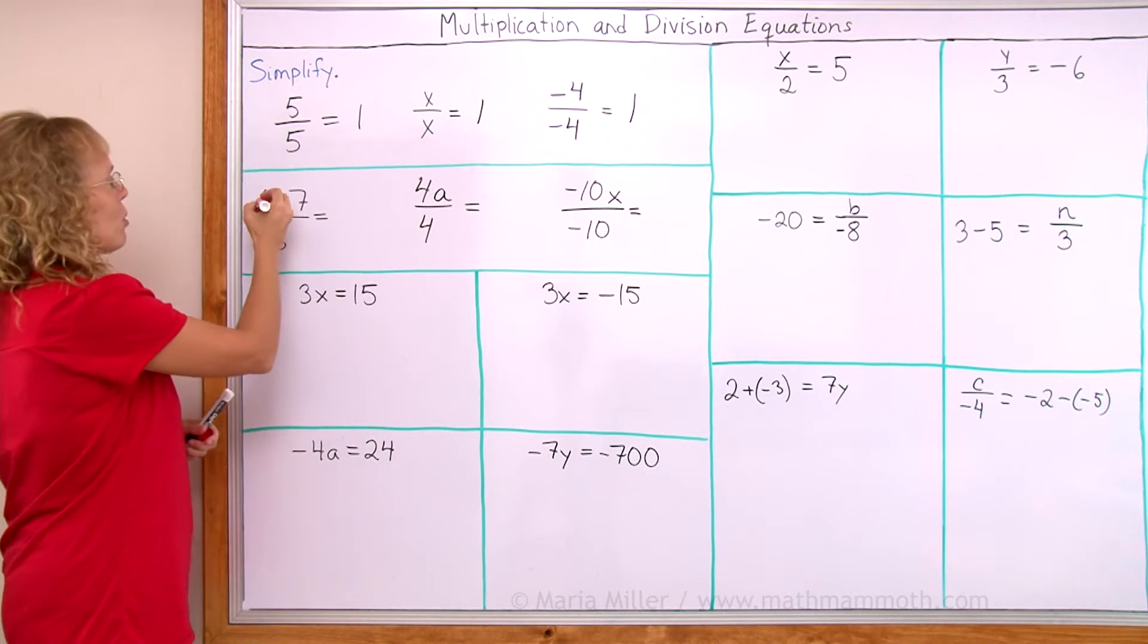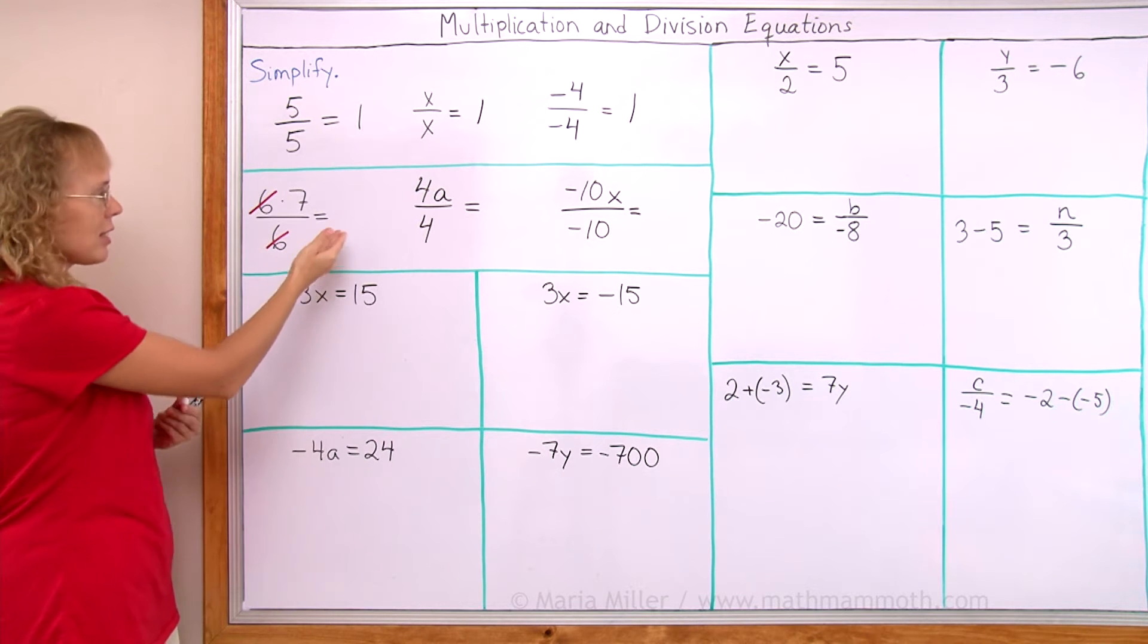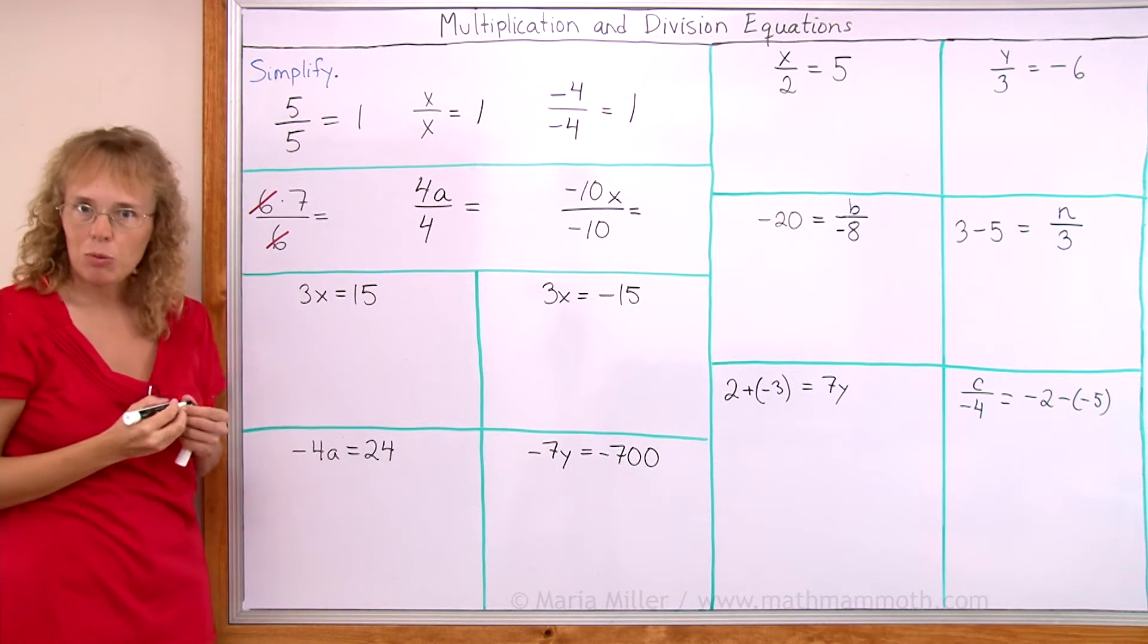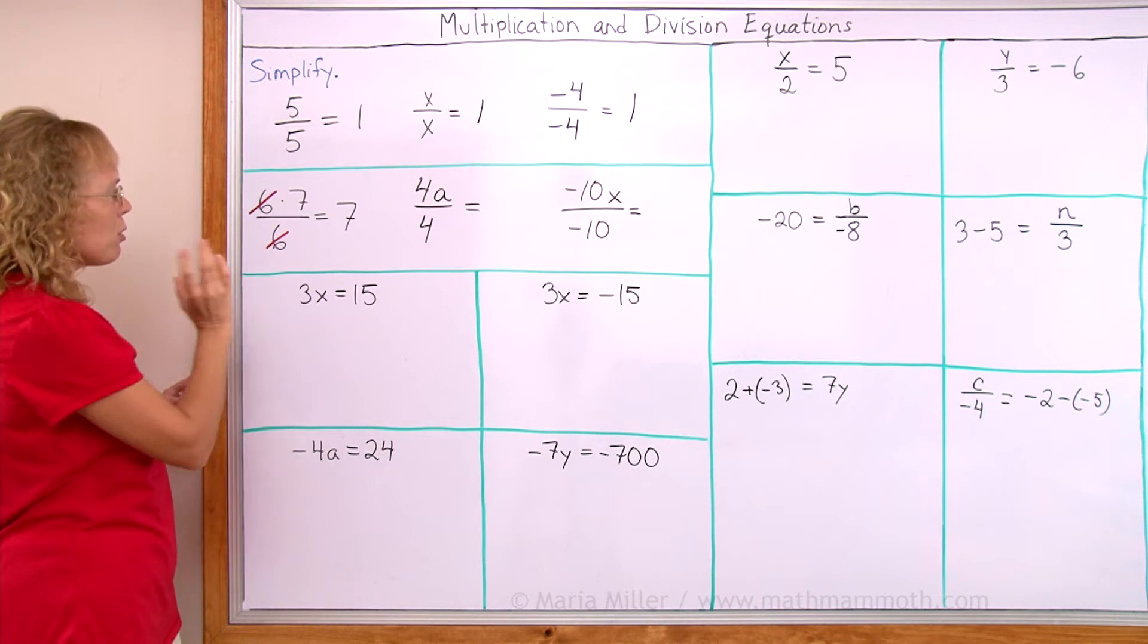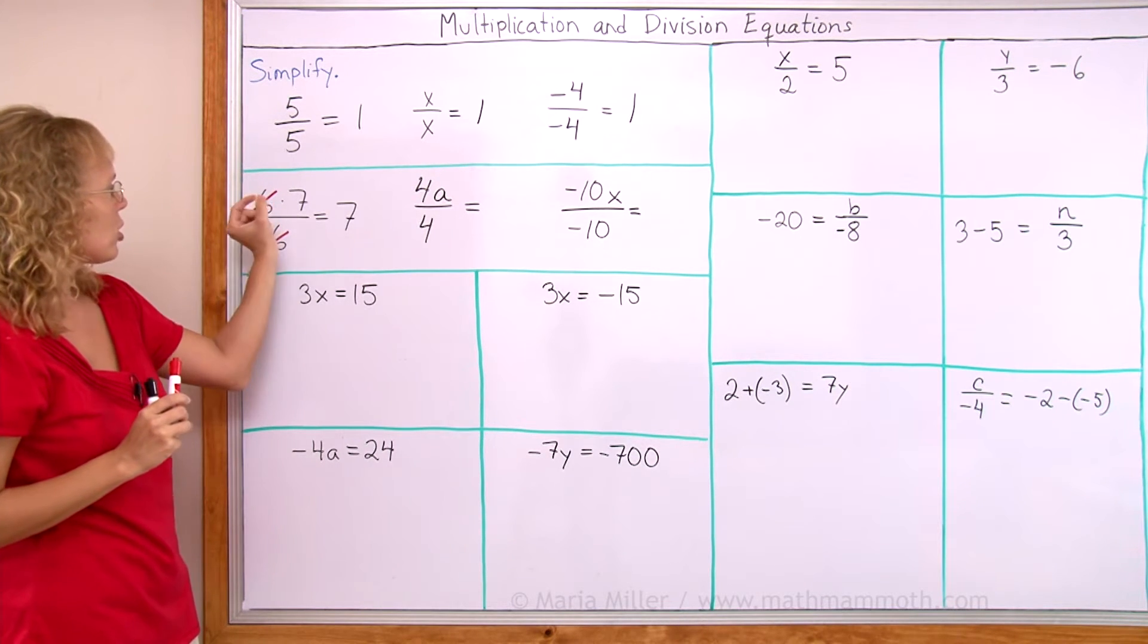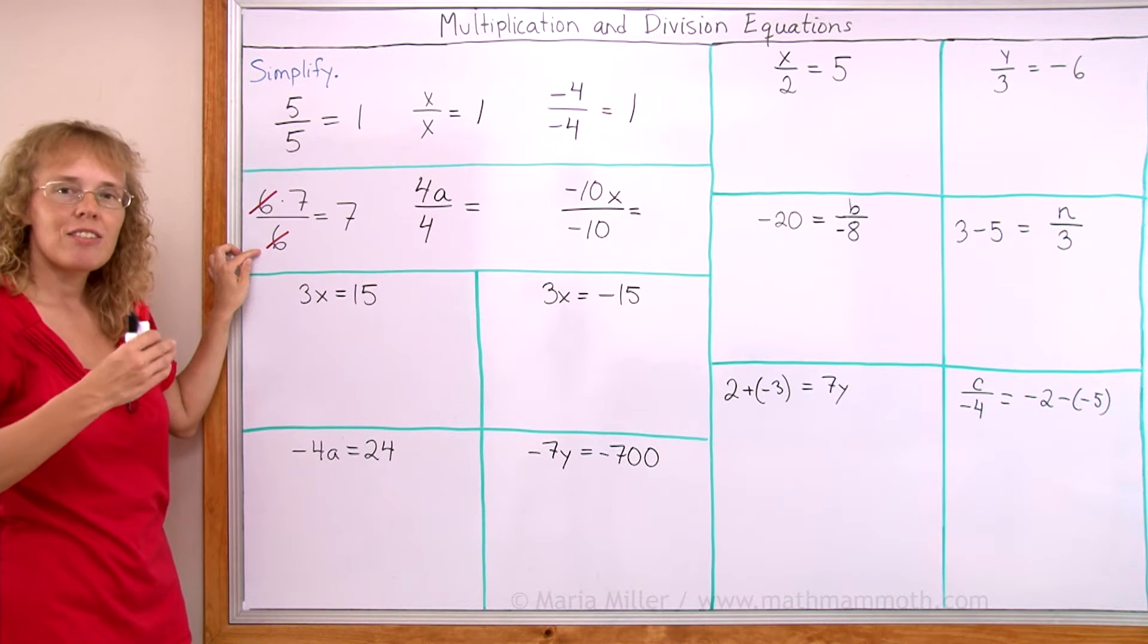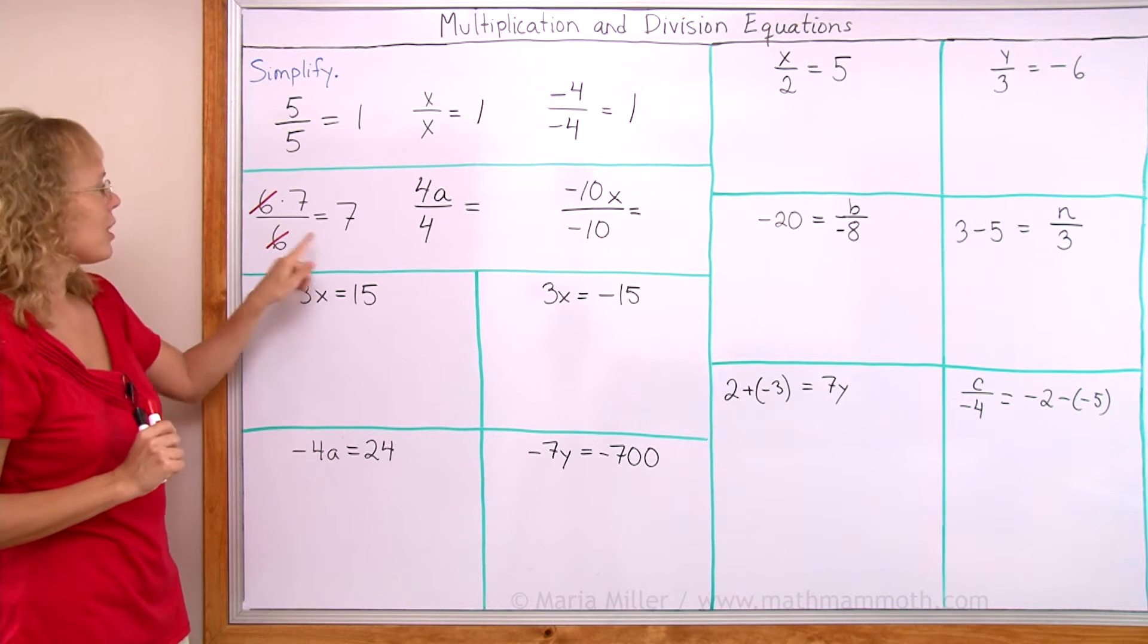Usually in algebra we will say the 6 cancel. The 6 and 6 cancel out, leaving just 7 then. What in reality happens is that we get 1 here. The 6 divided by 6 equals 1. So we have 1 times 7. And so then that's just 7. If you think this looks kind of difficult, think of the top part here this way. Switch it and make it 7 times 6. And then it reads 7 times 6 divided by 6. And that would be 1. So it leaves just 7.